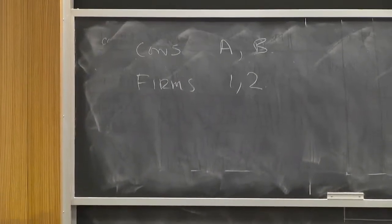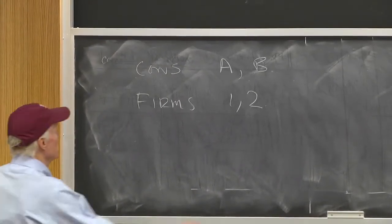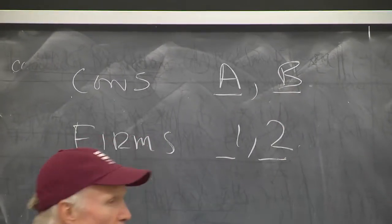Back to my problem here. So, consumers and firms. Consumers are A and B. Firms are 1 and 2.